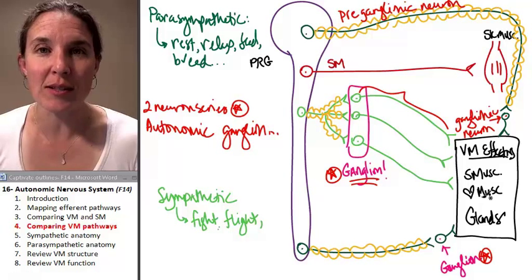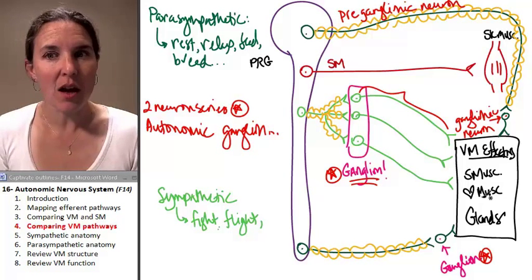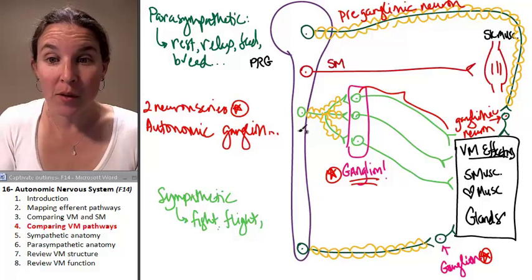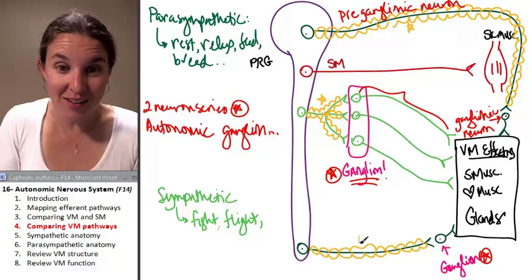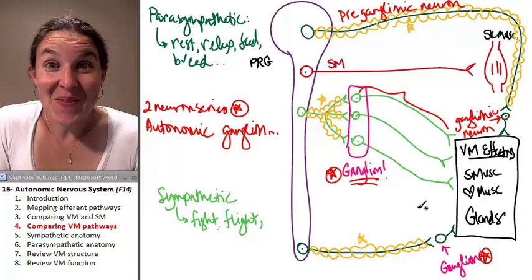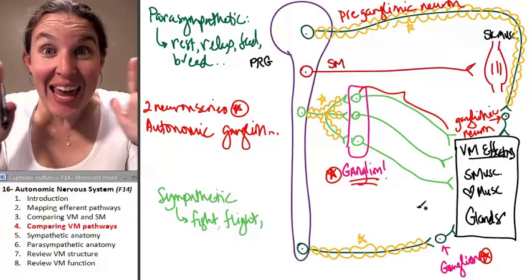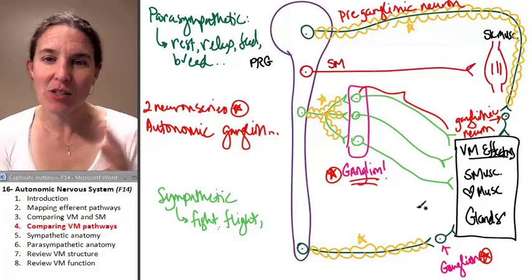What do you notice about preganglionic neurons? All of them. Look. All of the preganglionic neurons are myelinated. What do you notice about the ganglionic neurons? They are naked. There is no myelin there.